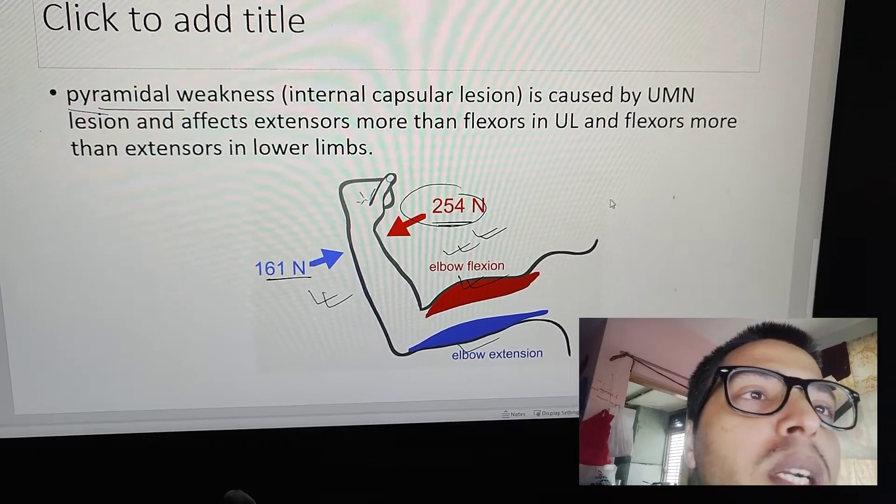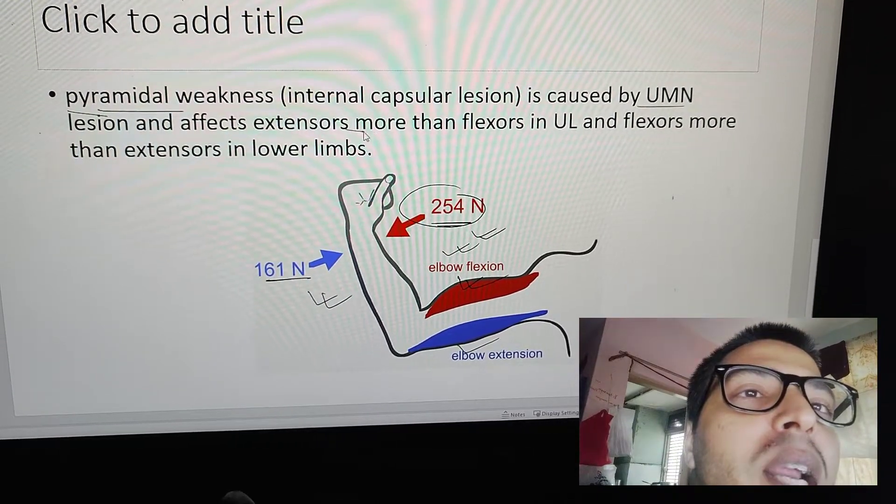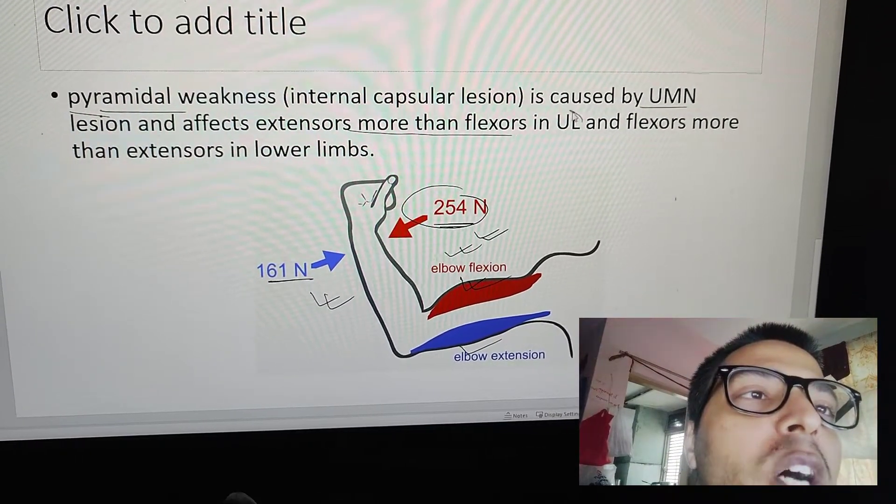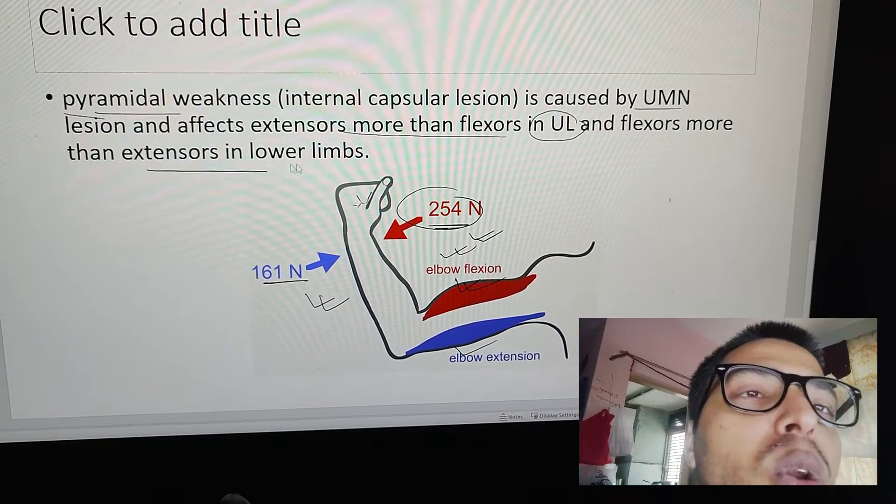In upper motor neuron lesions, extensors are affected more than flexors in upper limbs. But this is exactly opposite when you compare to lower limbs.